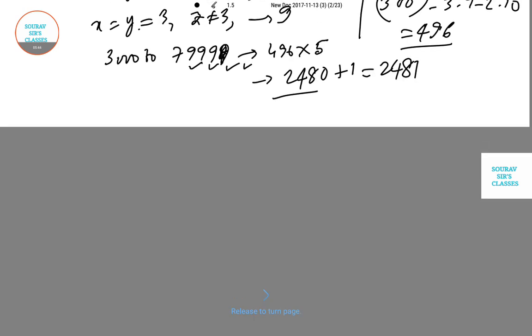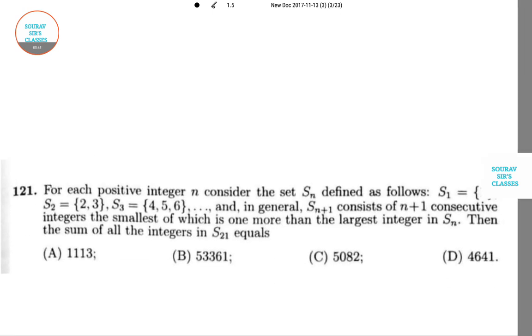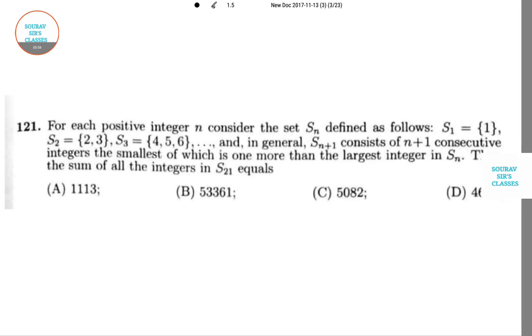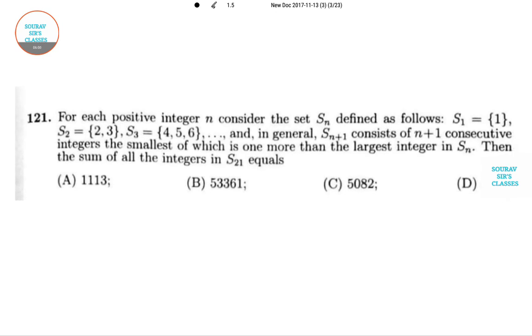Now question 121. This is a tricky question. For each positive integer n, consider the set S_n defined as follows: S_1 equals {1}, S_2 equals {2, 3}, and so on. The number of elements in the set are increasing, and a quick info that the total number of subsets from a set containing n elements is 2 to the power n.